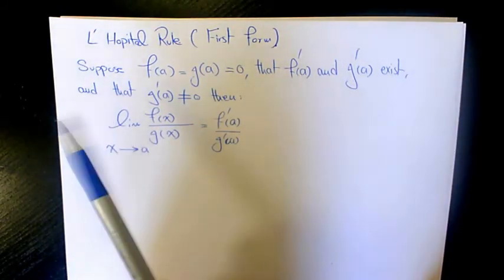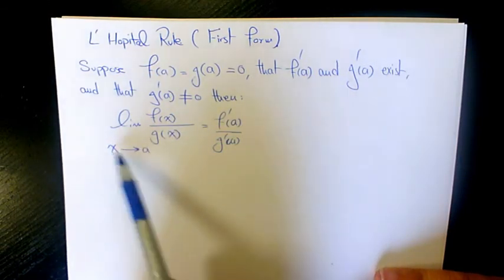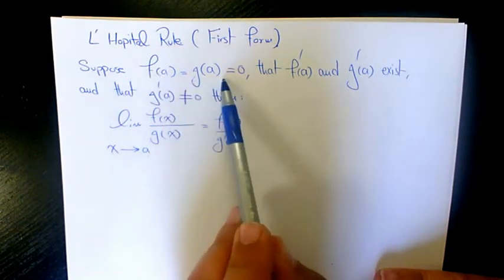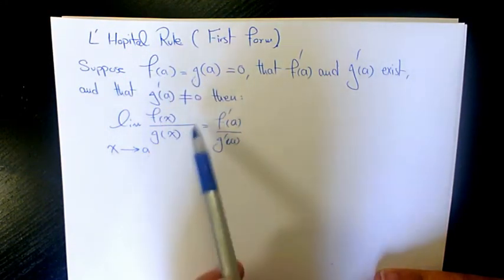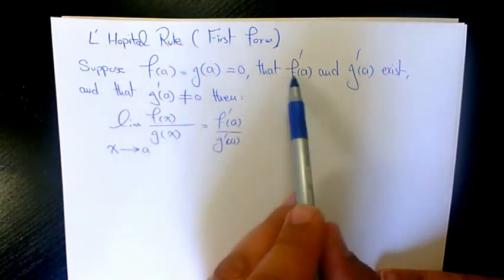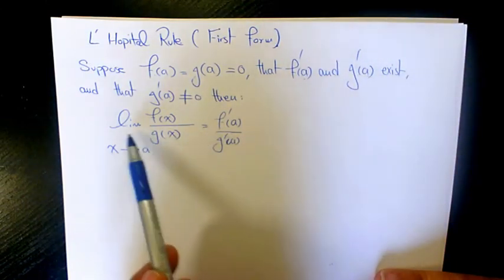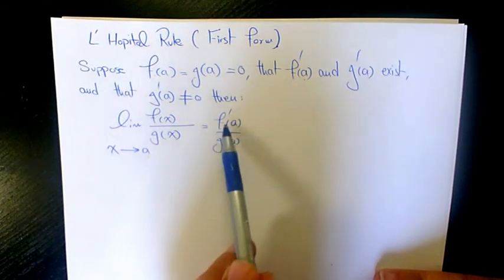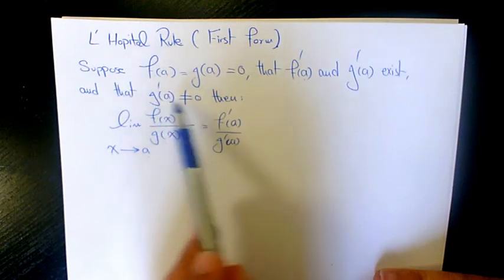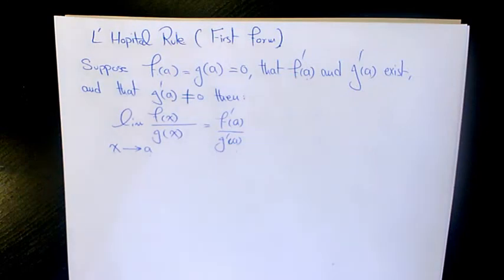What does L'Hôpital Rule mean? Whenever we have the limit of f(x) over g(x) when x approaches a, if f(a) equals g(a) equals 0, which means it's 0 over 0, and f'(a) and g'(a) exist, then we can say that limit is equal to f'(a) over g'(a). We need to make sure that g'(a) shouldn't be equal to 0. So that's how we find the limit of this kind of situation.